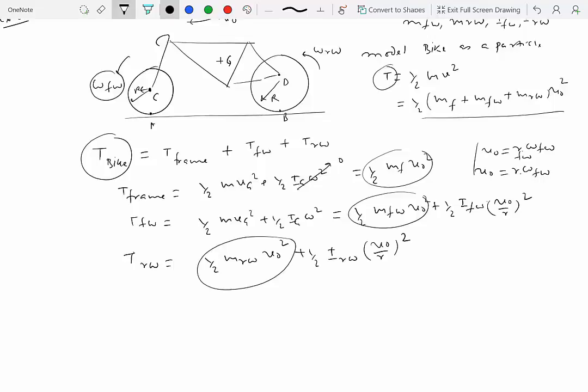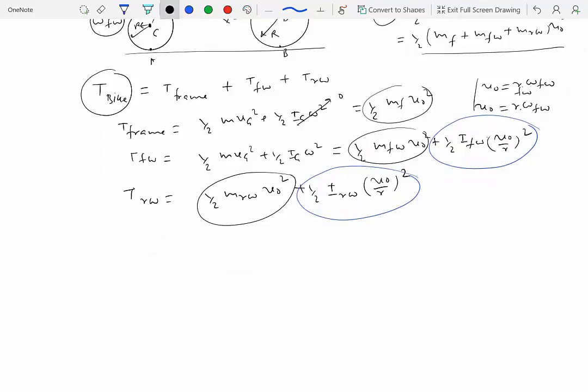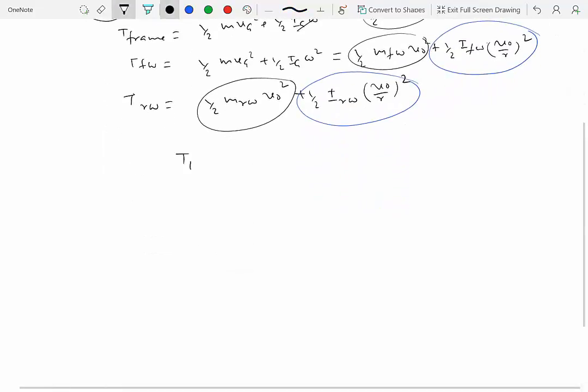But then you have this stuff extra, this is due to the rotation of the front wheel. And this is due to the rotation of the rear wheel, which means that the kinetic energy of the bike, kinetic energy of the bike when you model it as a rigid body, will be more than kinetic energy of the bike when you model it as a particle.